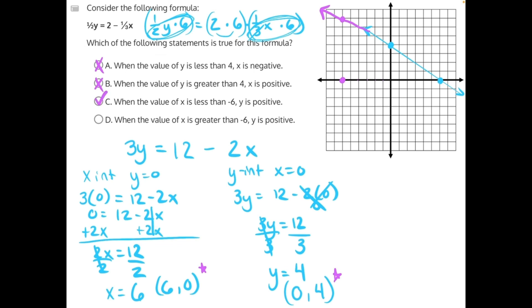Then, looking at why answer D is incorrect, when the value of x is greater than negative 6, y is positive. This would be incorrect. If we were to start here and head in the greater than direction to the right, most of these values would be positive, but then we would eventually cross the x-axis and get negative y values. So D is incorrect and C is our correct answer.